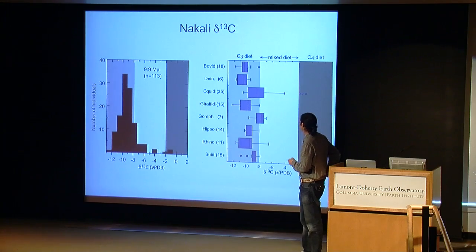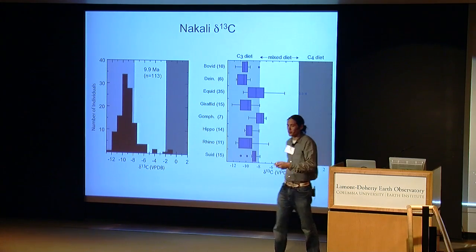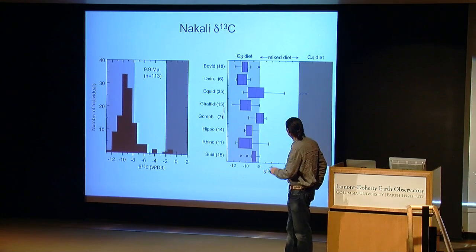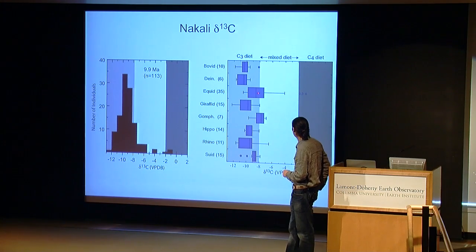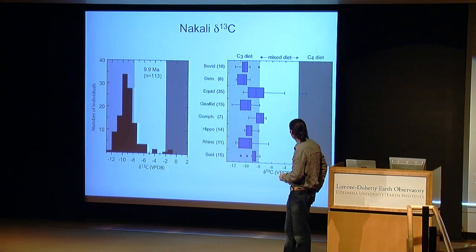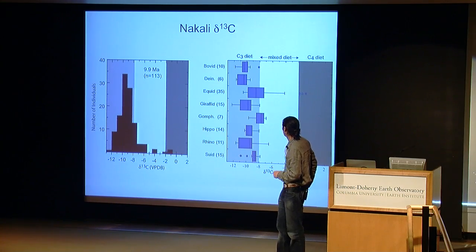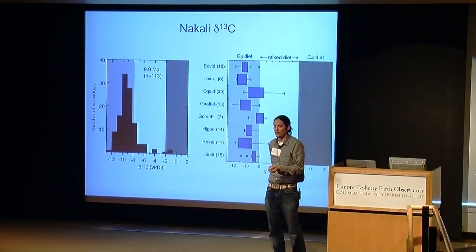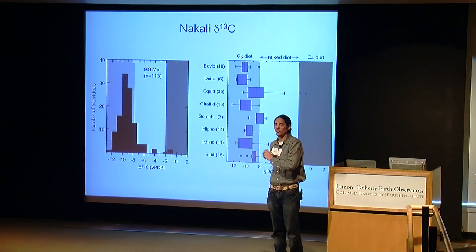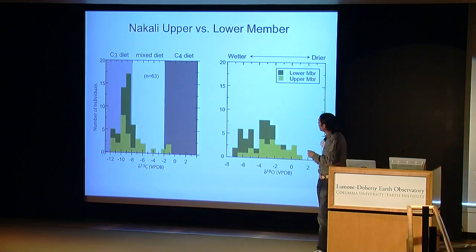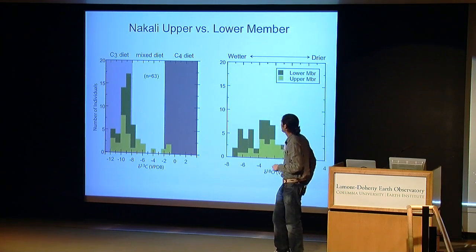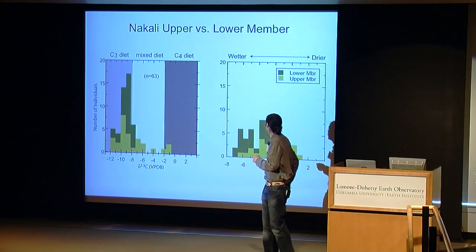Taking the Nakali histogram, we can break it down. This is a box plot with carbon on the X-axis. We have eight different families, and now you can see who's responsible for what at this site. Nearly everyone is in the C3 diet space except for a handful of equids — those three I analyzed many, many times to make sure I wasn't crazy. Some gonfotheres have a little bit of C4 in their diet potentially, and a single rhino and a suid. But the majority of the fauna is in C3 space.